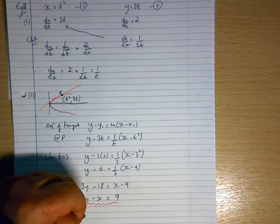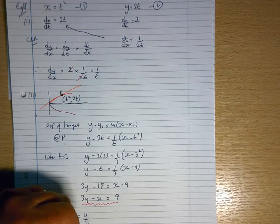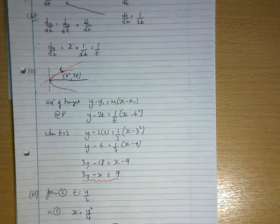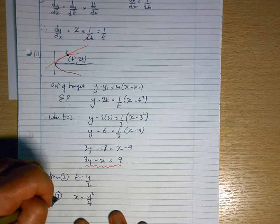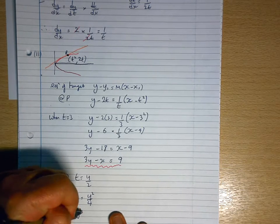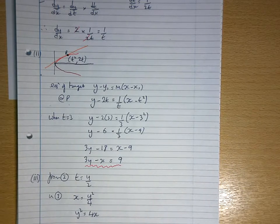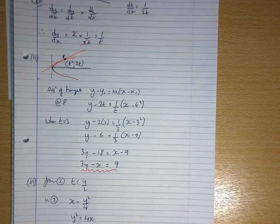t is y over 2. In equation 1, x equals y squared over 4. So y squared equals 4x. Okay. So that's eg18.